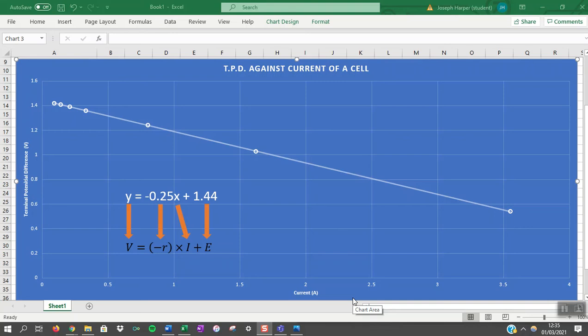Comparing this to the equation of a straight line, we see that the gradient is equivalent to the resistance and the intercept is equivalent to the EMF.